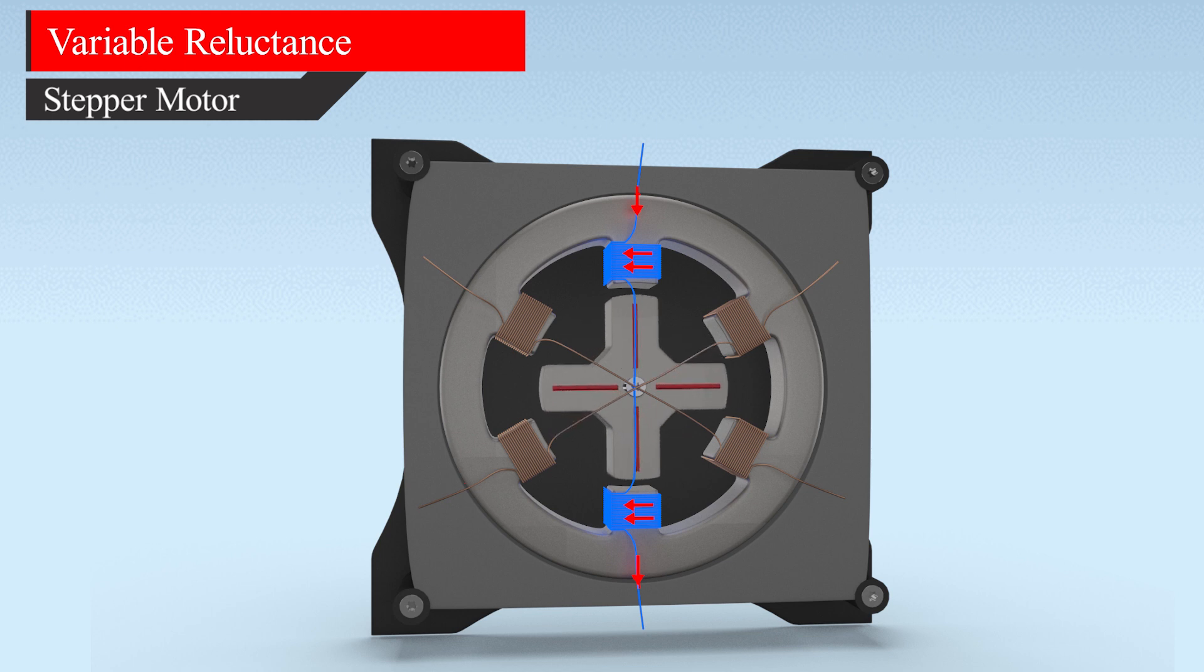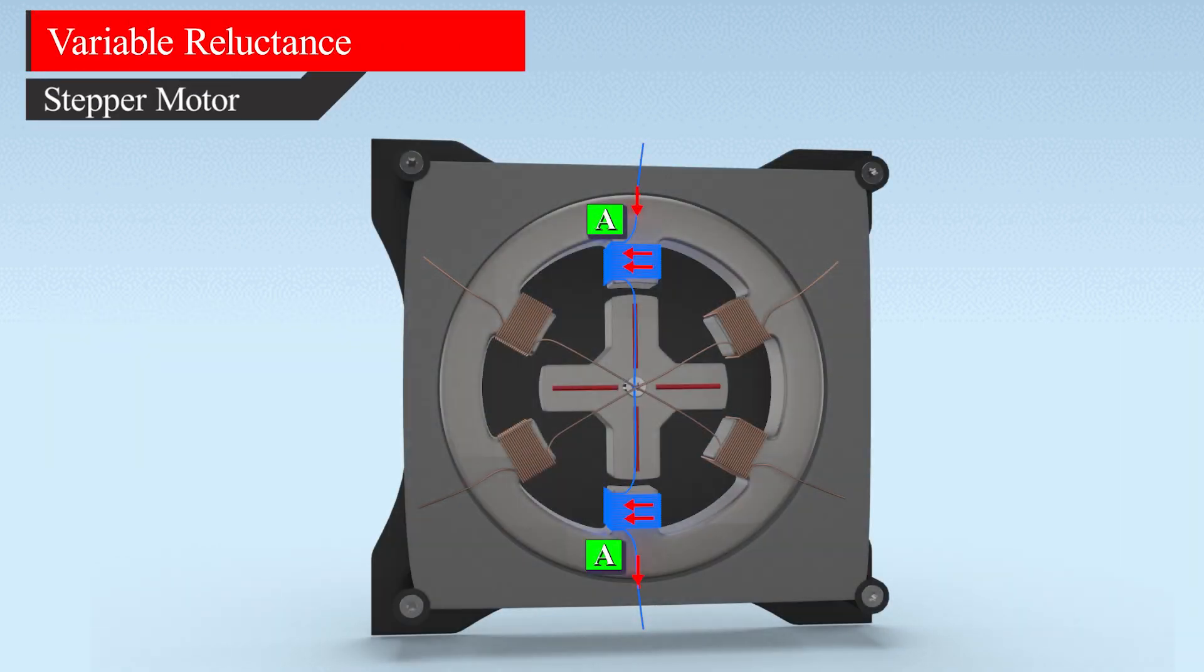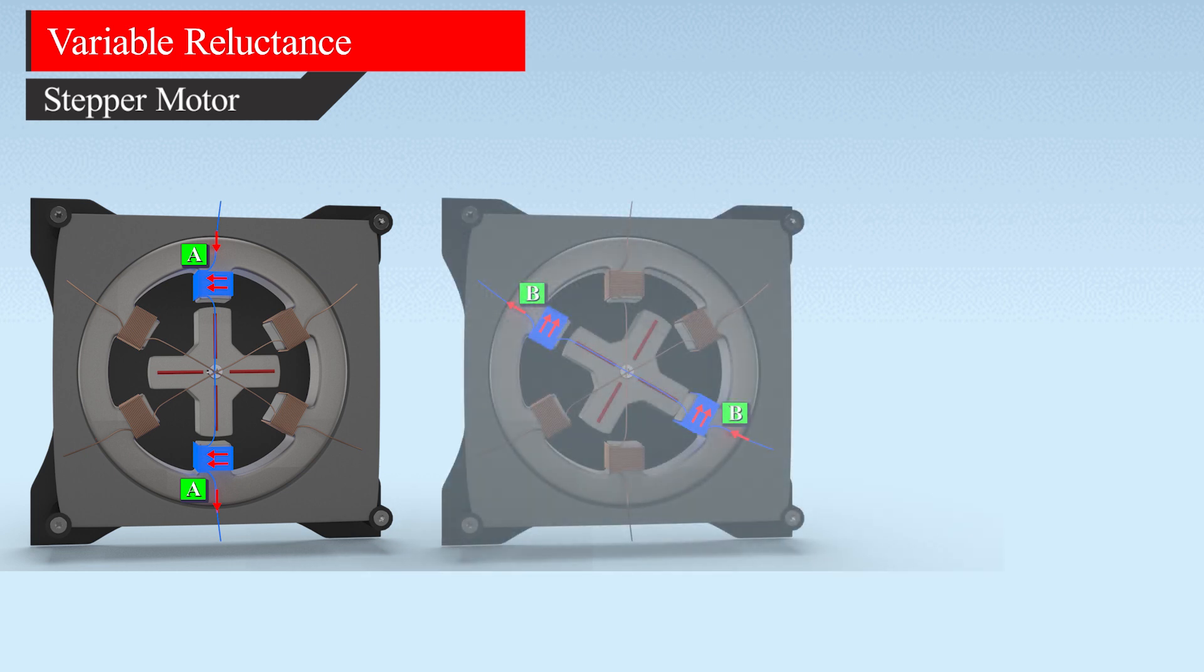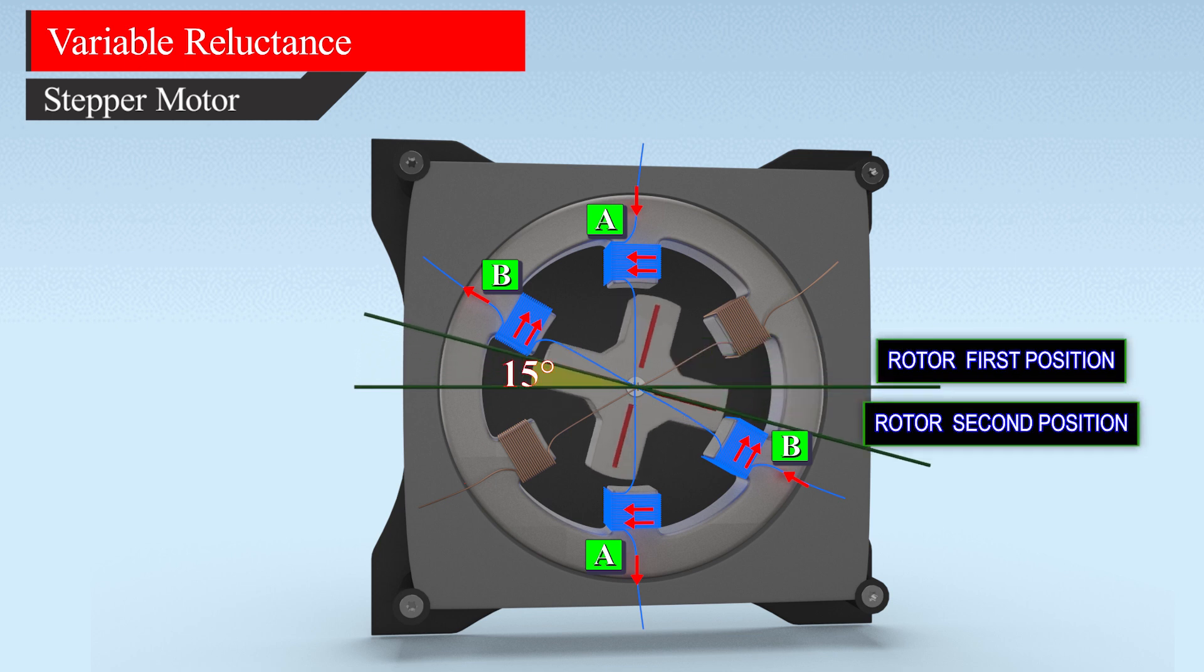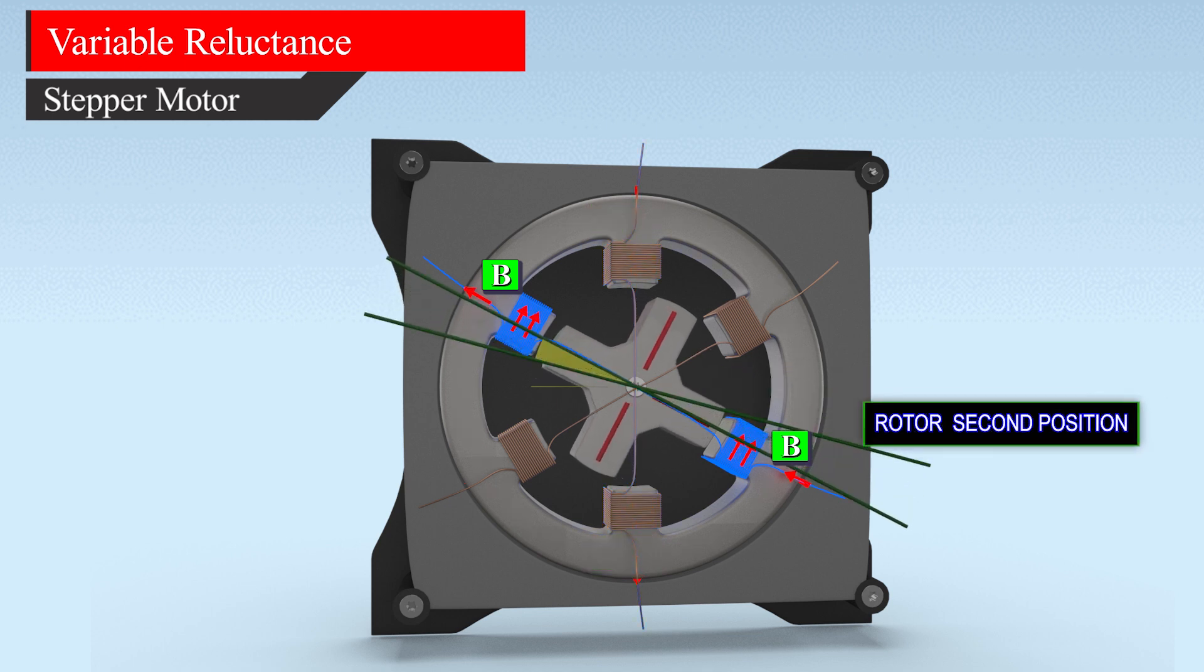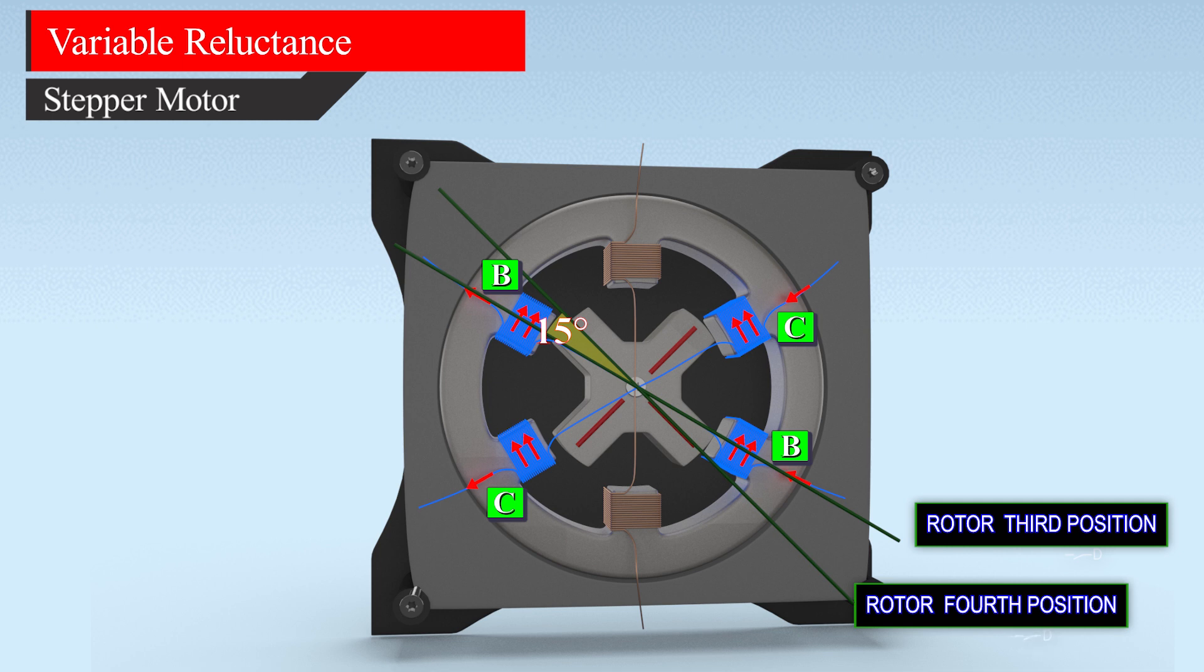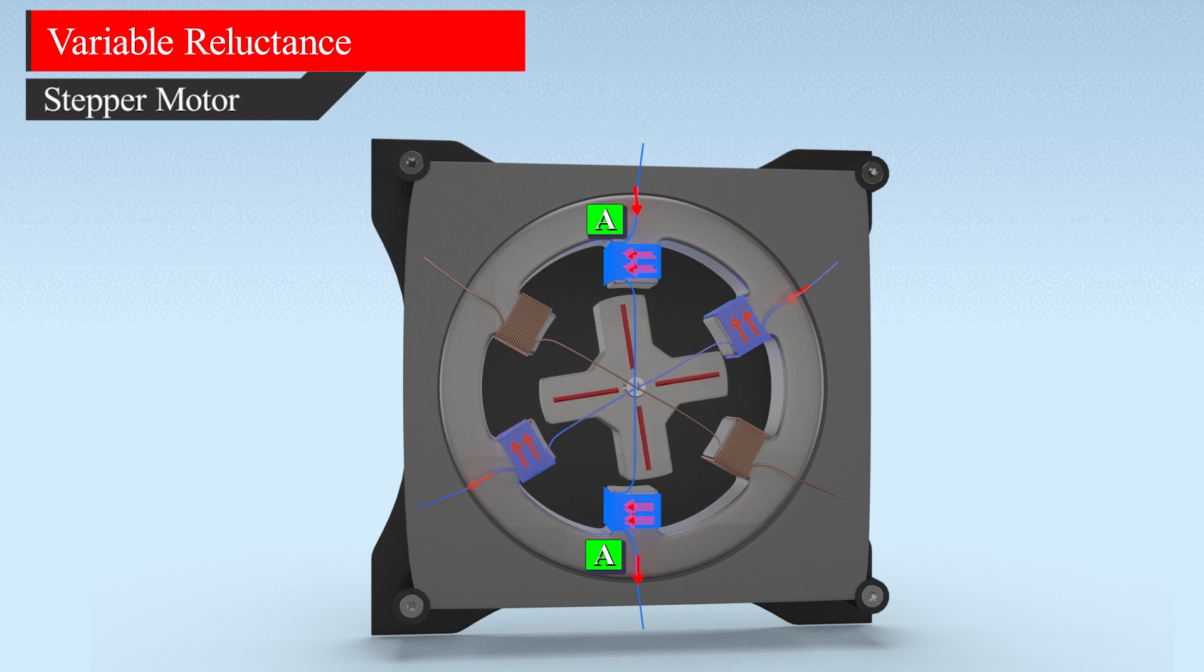We can improve accuracy to 15 degrees with half-stepping. When pair of windings A is energized, the rotor is in this position. Next, when we de-energize A and energize B, the rotor moves 30 degrees. What happens when coils A and B are energized together? The rotor will come to a position between these two cases, moving 15 degrees. Next, if we de-energize coil A, the rotor will align with coil B, moving 15 degrees. Then energize coil C and the rotor moves another 15 degrees, and so on. This operation is known as half-stepping.